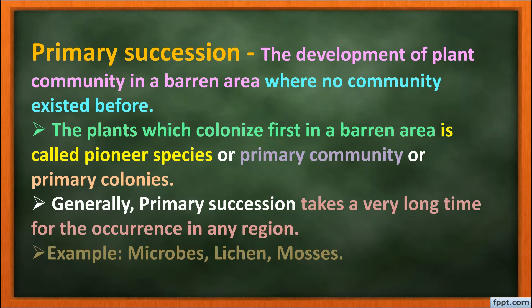Primary succession is the development of a plant community in a barren land where no plants or organisms existed before. The plant that colonizes first is called the pioneer species or primary community. Primary succession generally takes a long time to occur in any region — examples of pioneer organisms include microbes, lichens, and mosses.